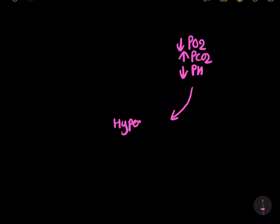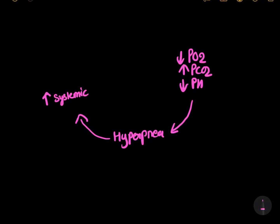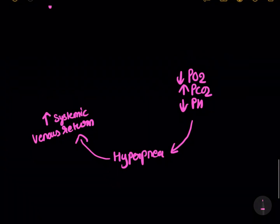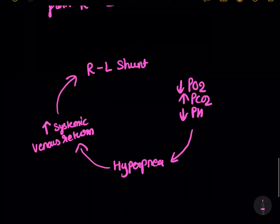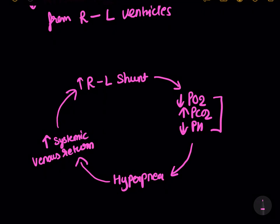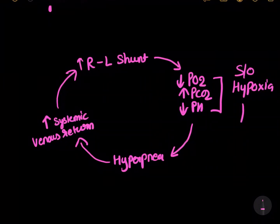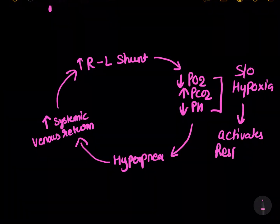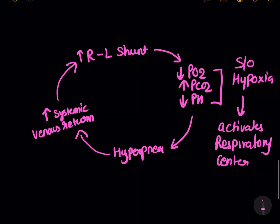Stimulation of the respiratory center causes an increase in respiratory rate, which causes increased venous return to the heart — more blood coming to the right ventricle from the body. This eventually leads to an increase in right-to-left shunt. We do not want the right ventricle to be burdened because the outflow was already stenosed. The increased venous return worsens the shunting of blood to the left ventricle, perpetuating the cycle.